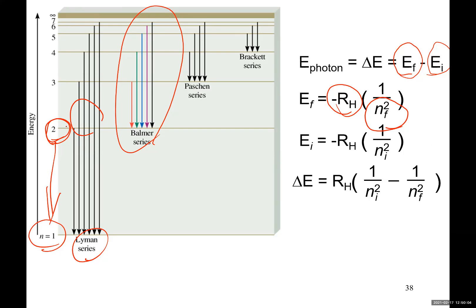Let's factor out RH. Multiply inside by negative and you see 1 over NI squared minus 1 over NF squared. And we know here N initial energy is 2, dropping to N equal to 1, right? In this particular case.